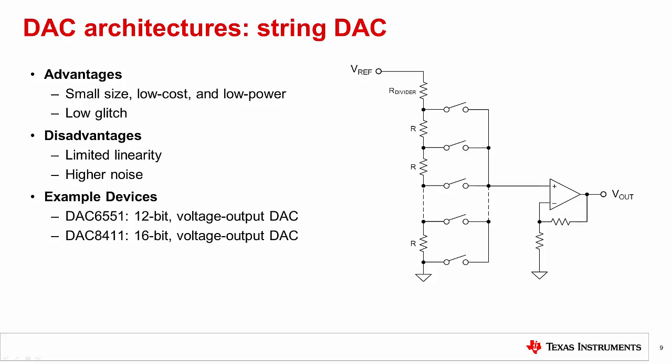The linearity of a string DAC is a bit limited as it is greatly dependent on the resistor matching of the string. Each of these resistors aren't exactly the same. The subsequent code transitions may be greater or less than one LSB.